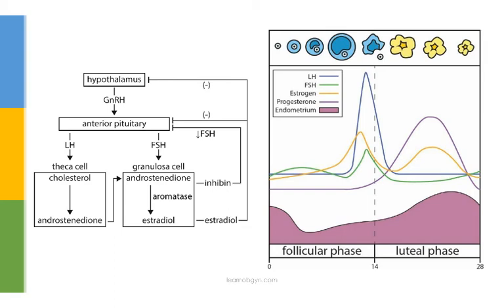On the cellular level, the anterior pituitary releases LH, which acts on theca cells to convert cholesterol to androgens. The androgens are then transferred to the granulosa cell, which is stimulated by FSH to convert the androgen to estrogen via the enzyme aromatase. A memory aid: F is next to G in the alphabet, so FSH acts on granulosa cells; L is close to T, so LH stimulates theca cells. Also, it's easy to remember that granulosa cells produce estrogen by thinking of a very feminine grandma.